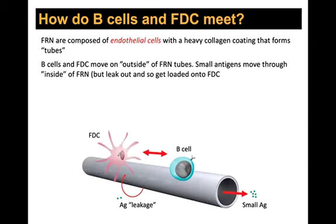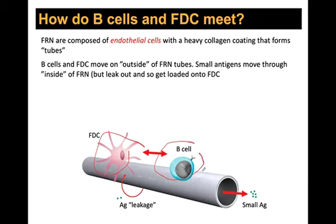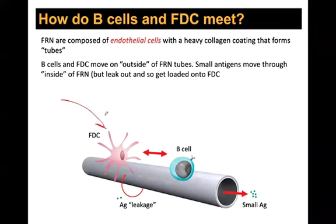The FRN tubes are made of endothelial cells with heavy collagen coating on the outside — hematopoietic cells like to travel on collagen, bringing B cells and FDCs together on the outside while antigen flows through the inside. For small antigens like proteins or small viruses this works via the FRN. For larger antigens, FDCs get loaded differently — via subcapsular space macrophages transferring antigen to non-antigen-specific follicular B cells, which then transfer it to FDCs.